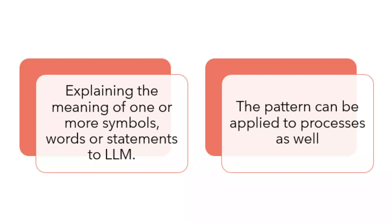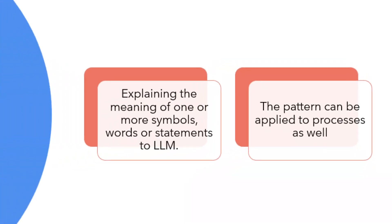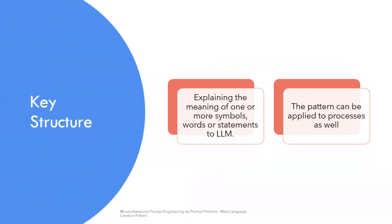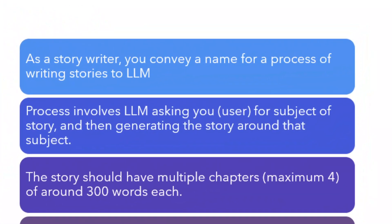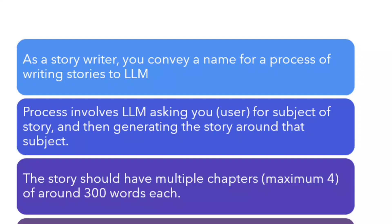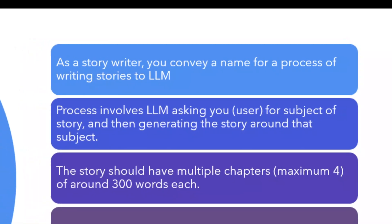The process part can be a little confusing to understand, so let's explain using an example. Let's say you are a story writer. You can come up with a meta-language for a process of writing stories for ChatGPT and give it a name. That would involve ChatGPT asking the user — that is yourself — for a subject of the story, and then generating a story around that subject.